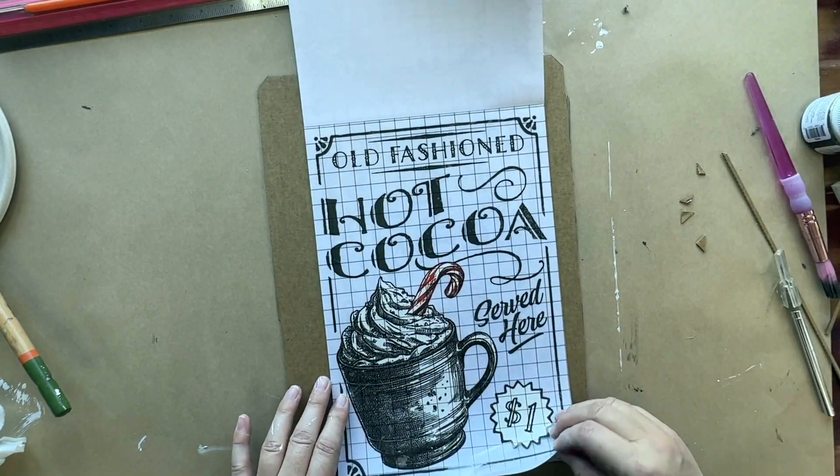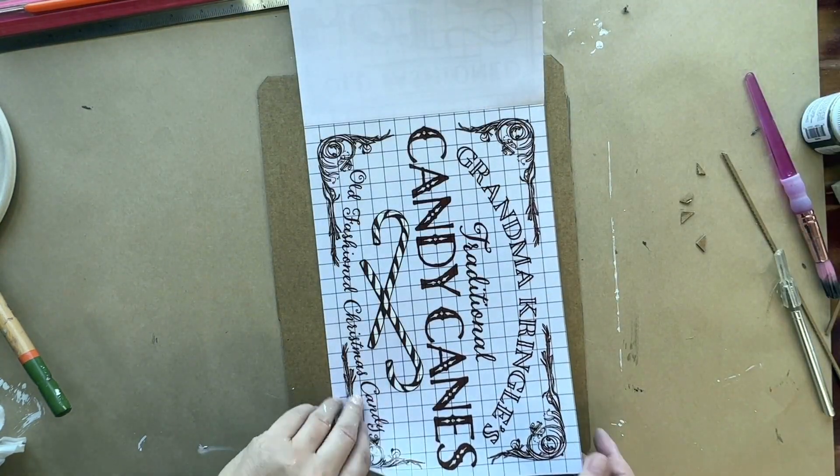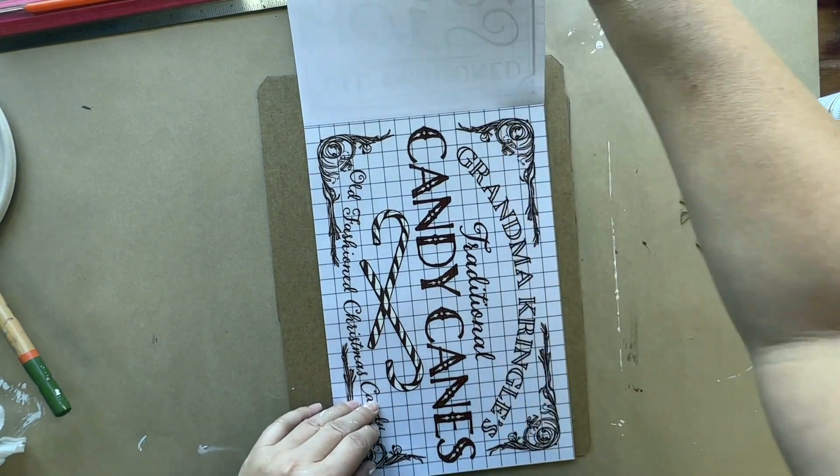There are eight pages of adorable images to choose from, and I think I'll be using the hot cocoa sign.